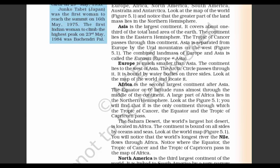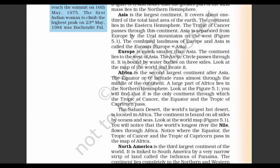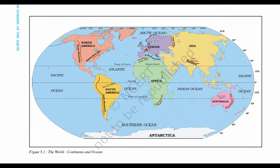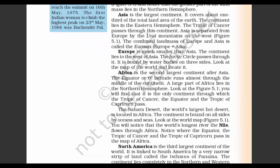Asia is the largest continent. The Tropic of Cancer passes through the continent — remember that the Tropic of Cancer also passes through India, and India is in Asia. Asia is separated from Europe by the Ural mountains. You can remember Ural mountain by its spelling — it starts with U, and U is also found in Europe. So the mountain that divides Asia and Europe is the Ural mountain.